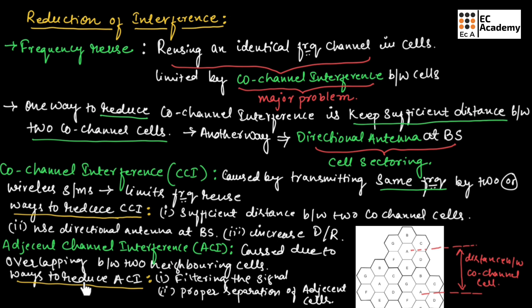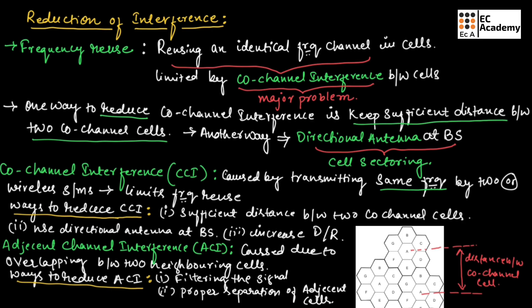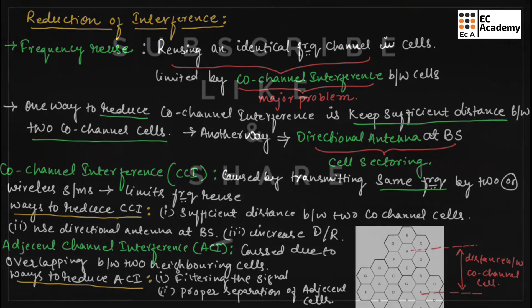There are two ways to reduce adjacent channel interference: the first way is to filter the signal that is to be received, and the second way is by proper separation of adjacent cells. This is about reduction of interference. Hope you have understood the topic. Thank you.